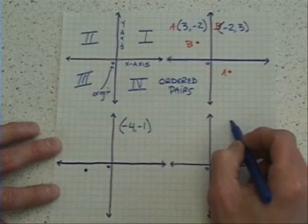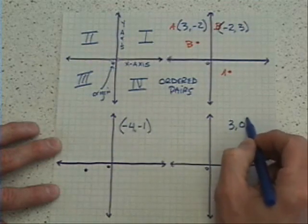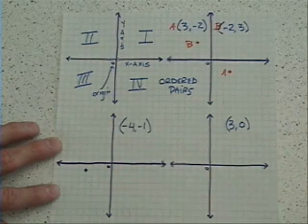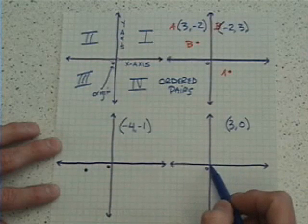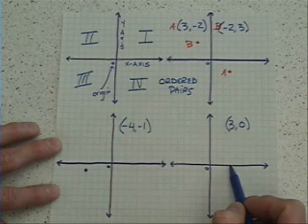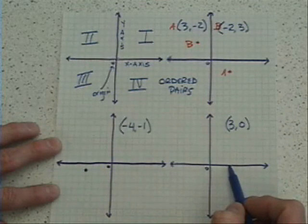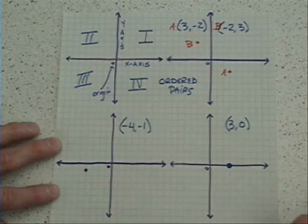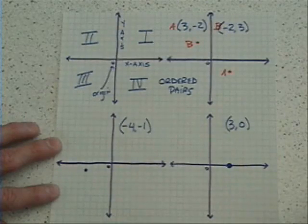And finally, if you have zeros involved, let's say I give you a point three, zero, you would follow the same rules. You start at the origin, you would move three spaces this time to the right: one, two, three. And zero indicates you don't move up or down, so I'm going to go ahead and put my point right on the x-axis, and that would be point three, zero.